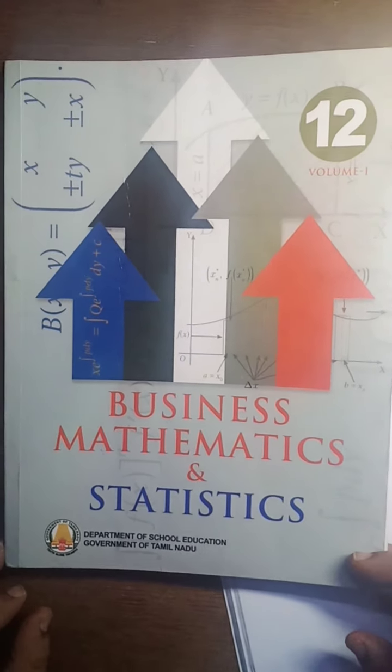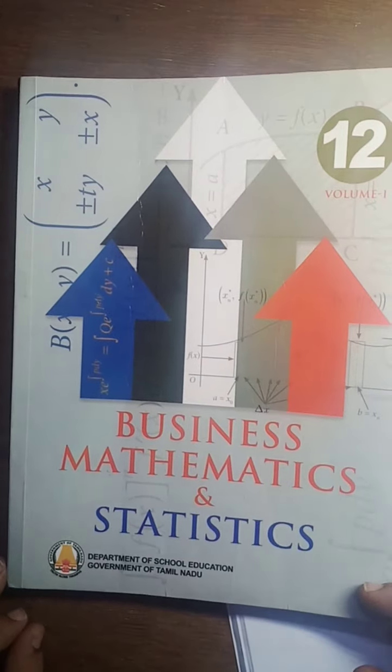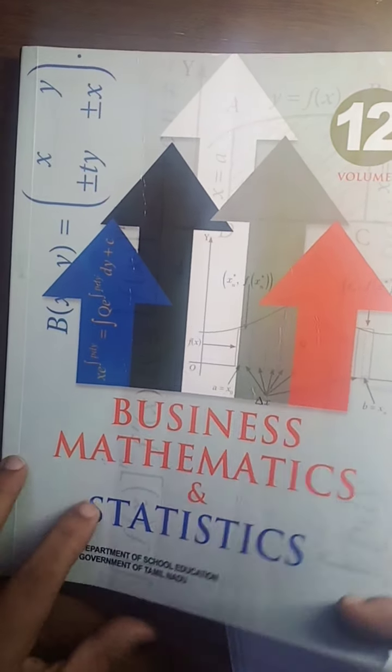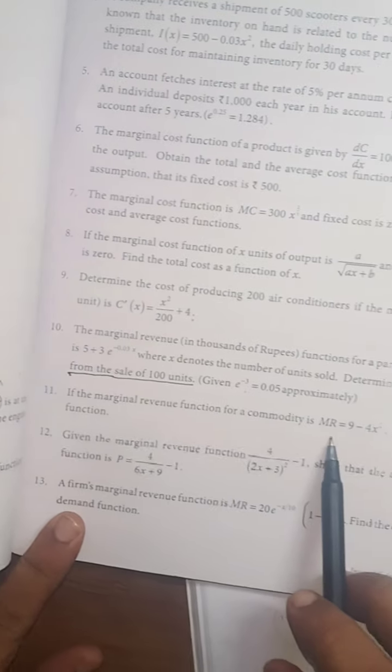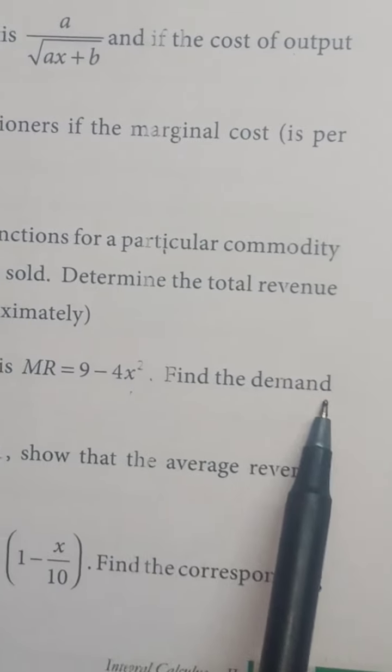Hi students, this is Sivokumar. 12th standard Business Mathematics and Statistics, Chapter 3, continuation of exercise 3.2. Now problem number 11. You are given the marginal revenue MR = 9 - 4x². You are asked to find the demand function.